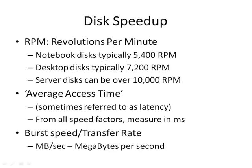There's a range of things people have done to improve speed. Revolutions per minute for server disks can be well over 10,000 RPM, while notebook disks are typically slower to save power. When you measure all the different delays together, that's often referred to as average access time, sometimes also called latency. Speed is usually measured in terms of burst speed and transfer rate — burst speed being the maximum speed when the disk head is over the data you actually want to read.